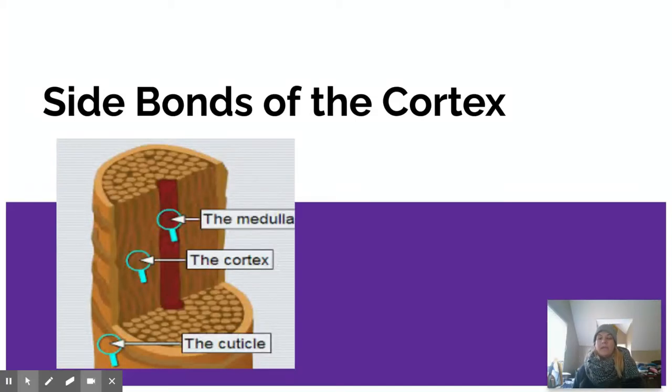Okay, so up until this point, we have talked about the three layers of the hair: the medulla, the cortex, and the cuticle. The medulla being the center, the cortex being sort of like the in-between, and the cuticle being the outside.